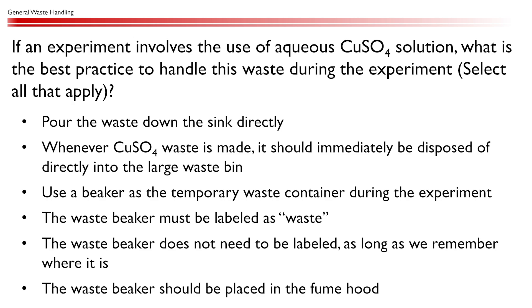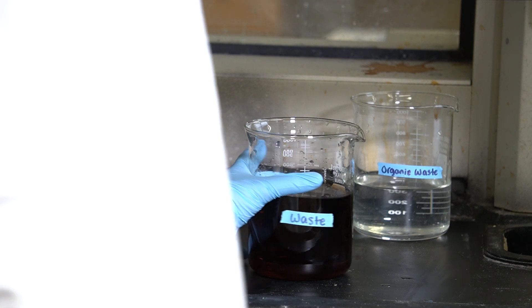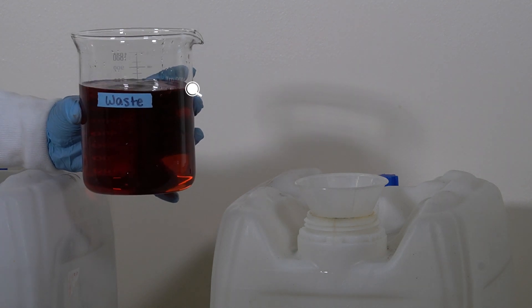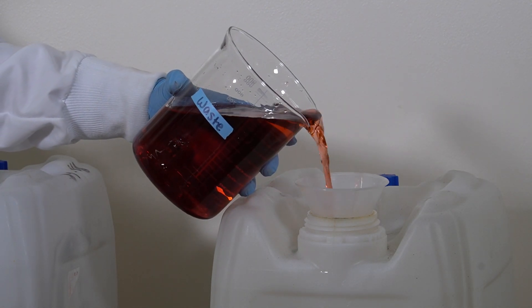If an experiment involves the use of aqueous copper sulfate solution, what is the best practice to handle this waste during the experiment? That's right, you'll likely find it most expedient to use a local waste beaker, properly labeled as waste, that you keep in a nearby fume hood. When the waste beaker gets about 75% full, dispose of it in the larger satellite waste bins.